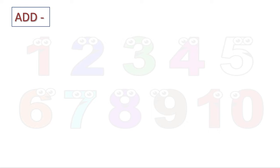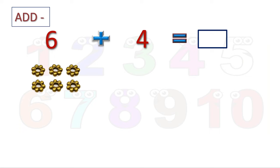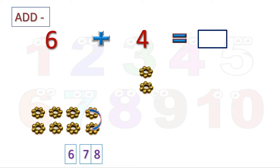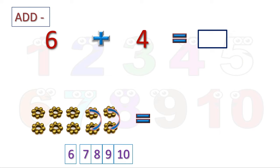One more: 6 plus 4 is equal to how much? You can see 6 golden flowers and 4 flowers. There are 6 to start. We will count 4 numbers in the forward direction: 7, 8, 9, and 10. All together there are 10 flowers. So 6 plus 4 is equal to 10. This method is called the counting forward method.